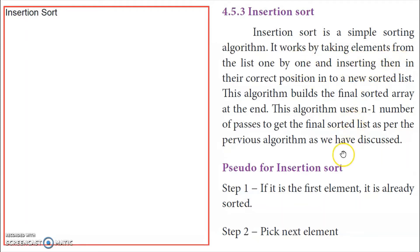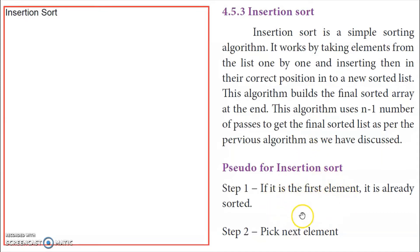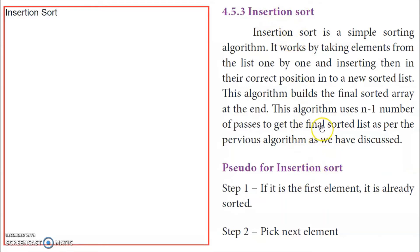The first element is already considered sorted. The second element will be compared and inserted into its correct position. If not, it will remain in the second position itself. The third element will be taken and compared with the first and second elements and inserted in the correct position. This is called insertion sort. The algorithm uses n-1 number of passes to get the final sorted list.